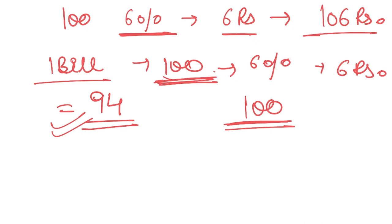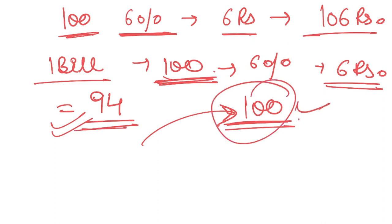So you give 94 rupees, and after one year, the Government of India promises to pay you 100 rupees. In this way, the Treasury Bill interest mechanism works. It does not give interest directly — instead, it is issued at a discount, and the face value of 100 rupees is what you receive at maturity. I hope this example makes the concept clear.